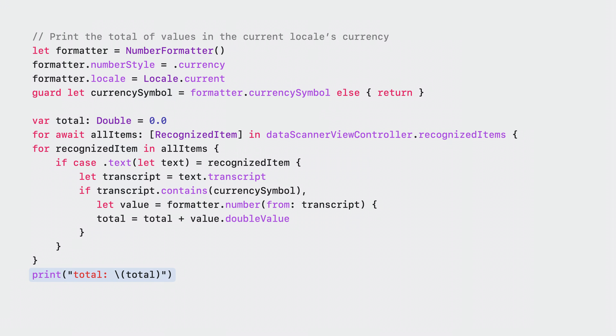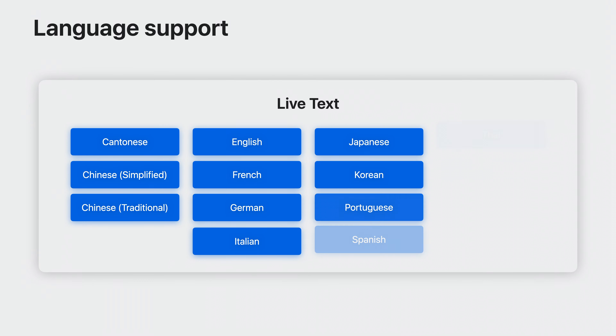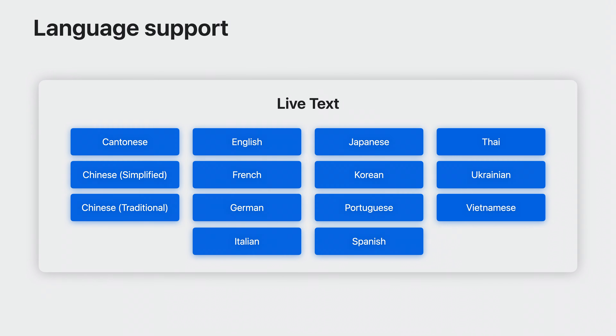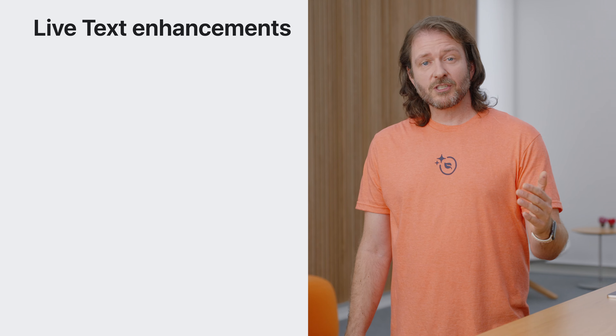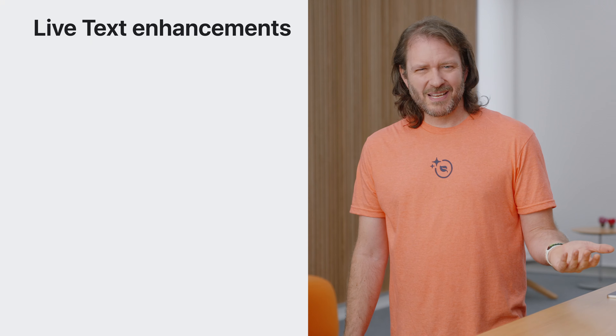And now I'm going to talk about enhancements to live text. First off, live text is coming to more regions by expanding our supported languages to include Thai and Vietnamese. Live text includes enhancements for document structure detection as well this year.